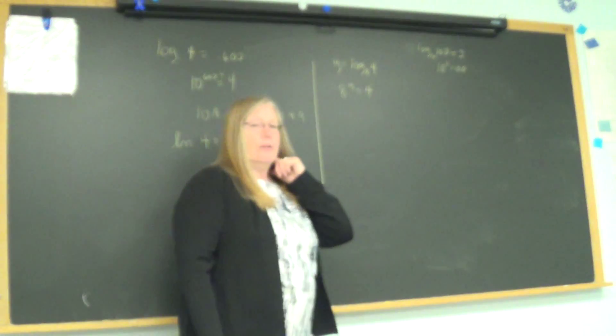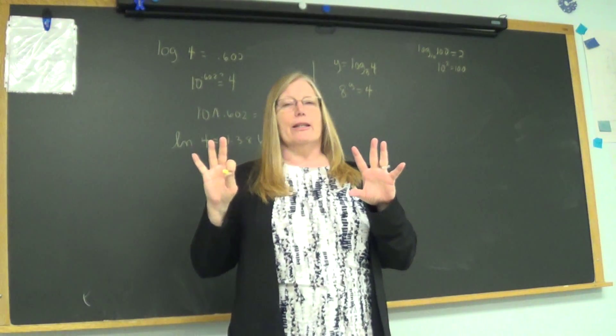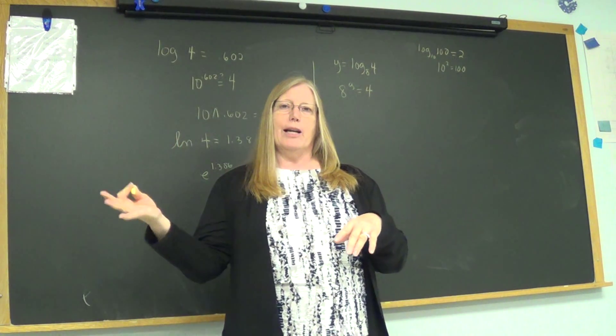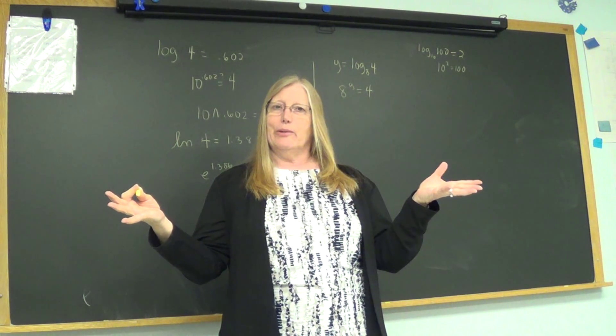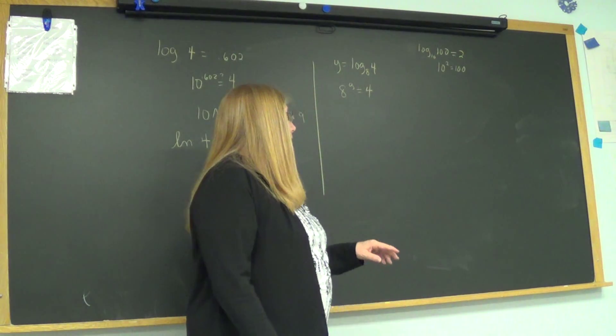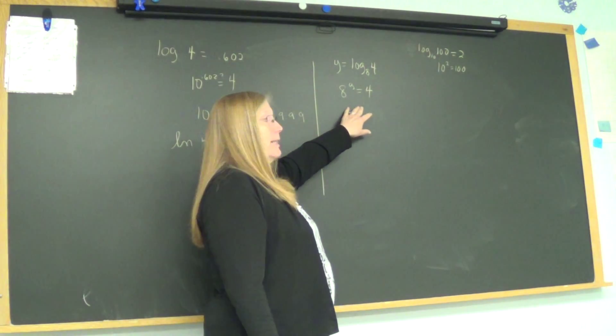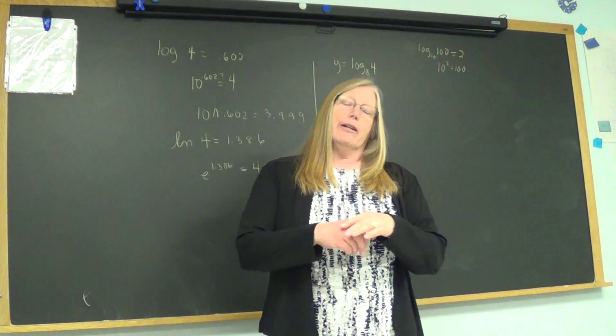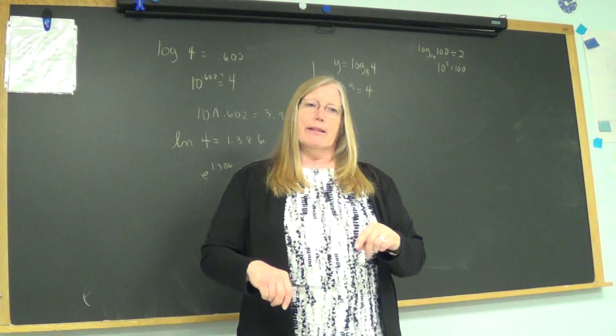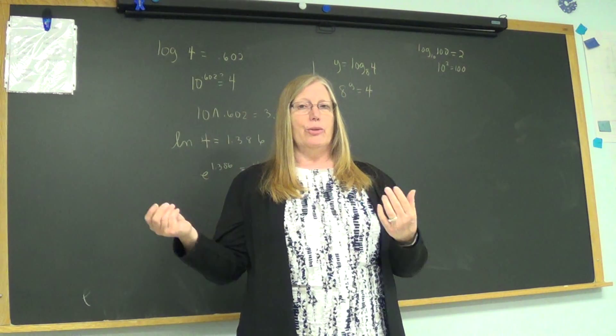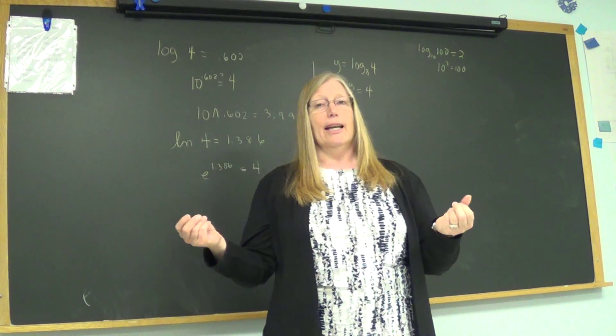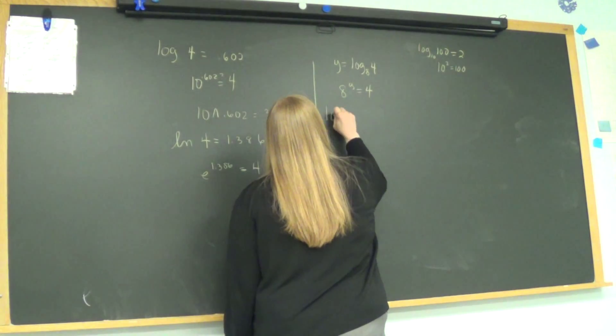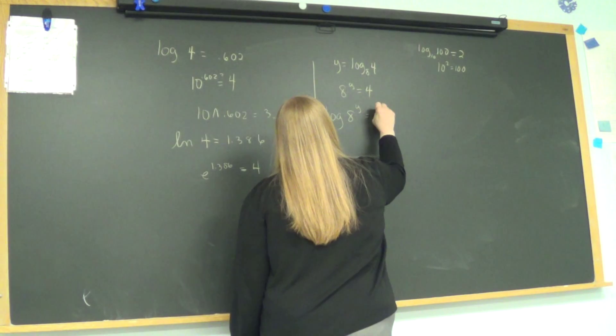One thing we can do in mathematics when we have an equation is we can do whatever we do on one side we can do on the other. We can subtract 2 on one side, subtract 2 on the other. But if we have a situation like this and we have an exponent, we may want to take a logarithm because the logarithms work well with exponents. So I'm going to take a log that I do know, such as LOG, of both sides. I'm allowed to do that, mathematically sound.